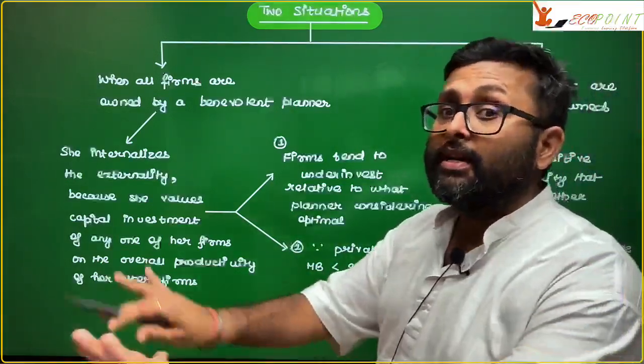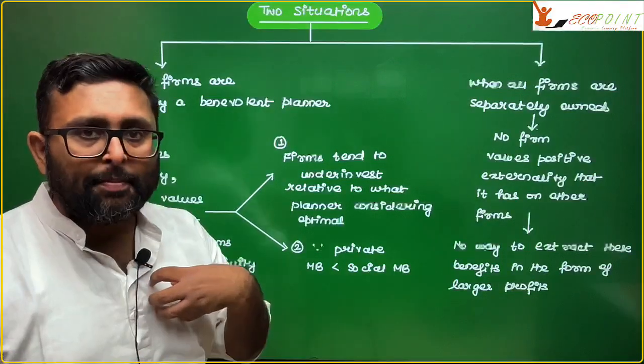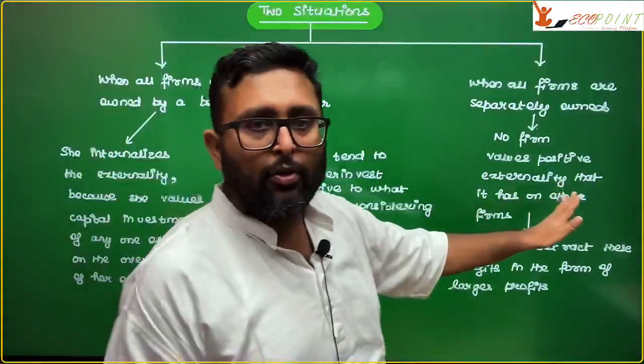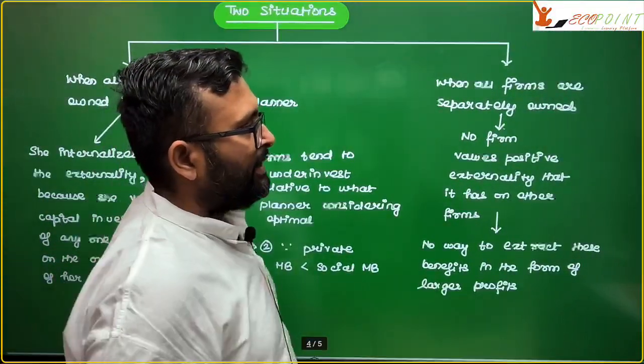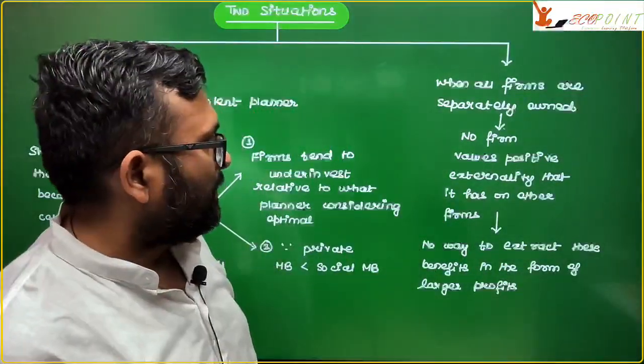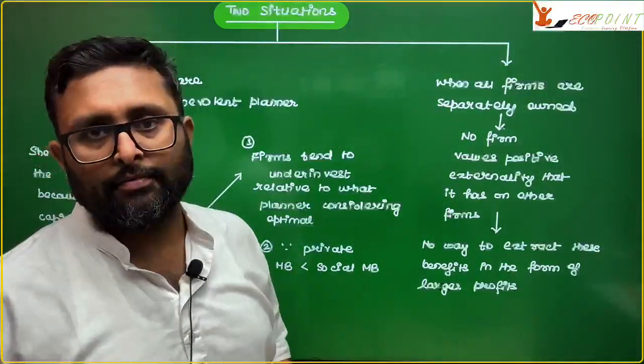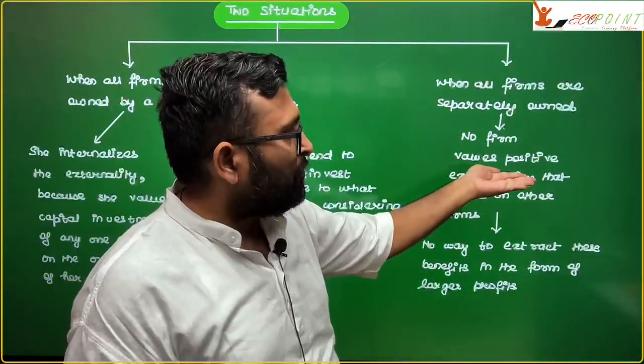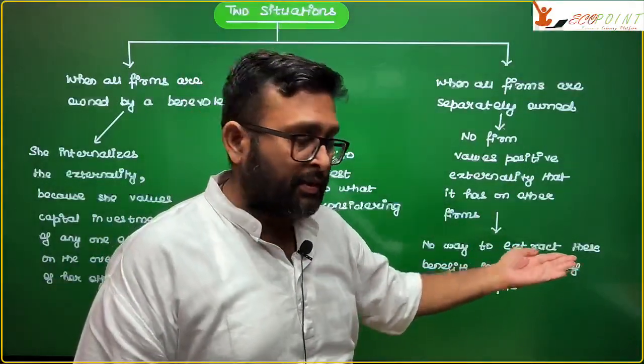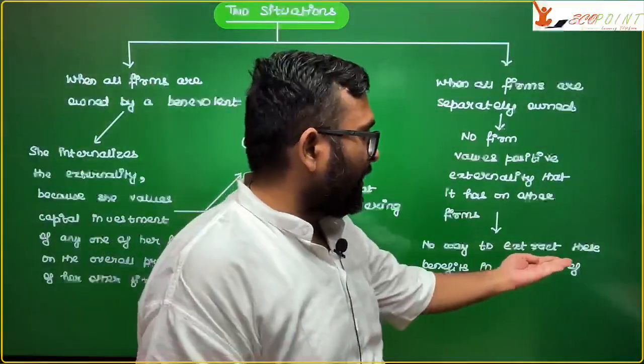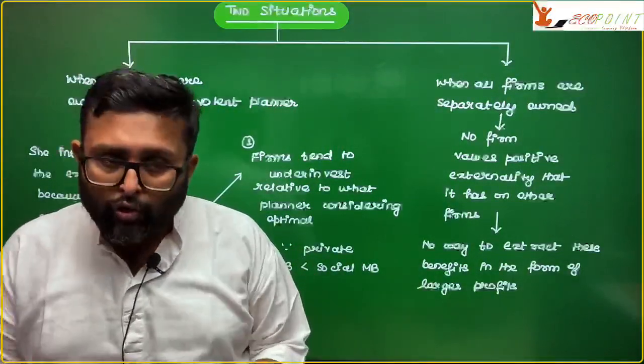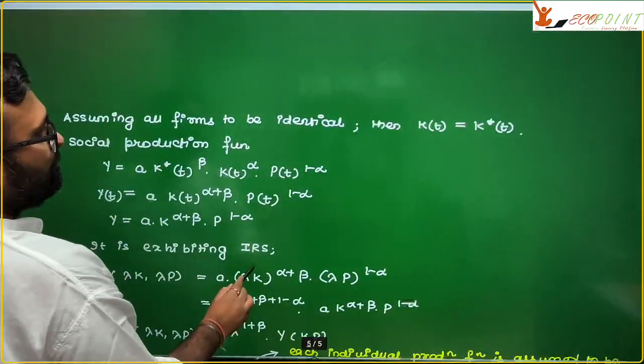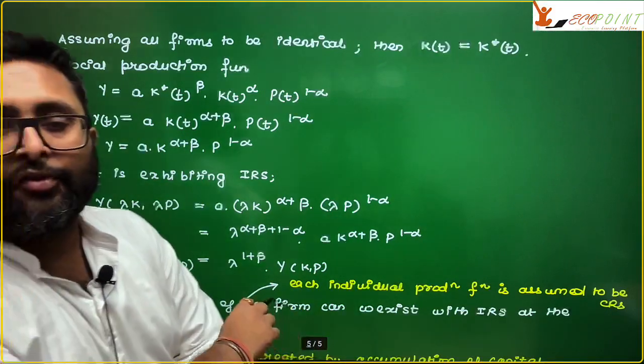So, in this kind of a situation, when government is owning all the firms, my private marginal benefit of a particular firm is less than society's marginal benefit. The second situation is when all firms are separately owned. And then they invest. Because they know that it's not the case that some other firm will invest, I have to invest myself. So, no firm is going to value positive externality that it has on the other firms. And of course, there is no way to extract these benefits in the form of the larger profits also.